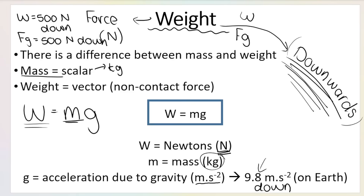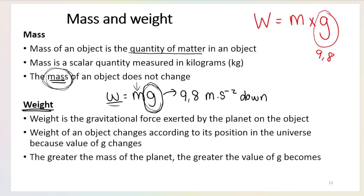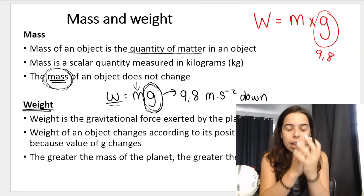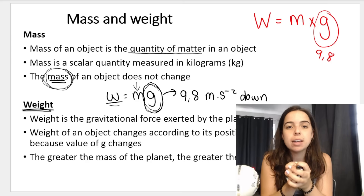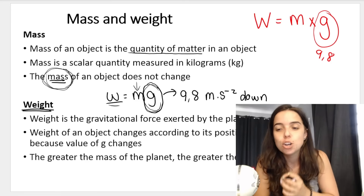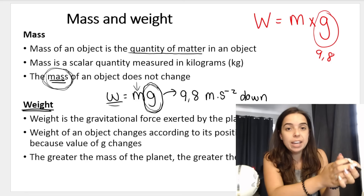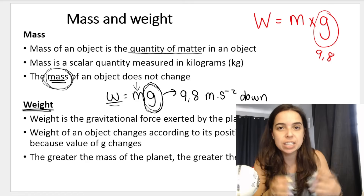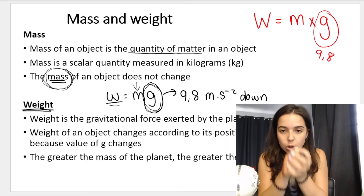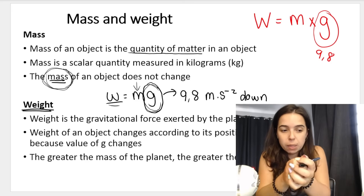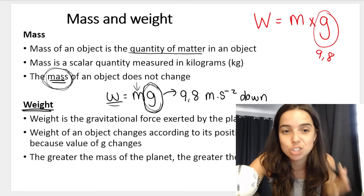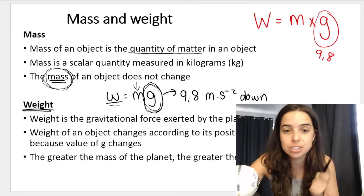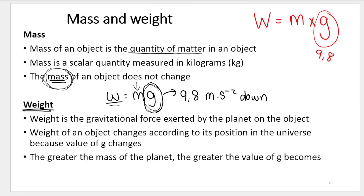Weight is different to mass. Mass is the quantity of matter of an object — how much matter it contains. For a single object, the mass does not change depending on where you put it, no matter which planet it's on. So if it's on Earth it has the same mass as when it's on Mars, the Moon, or Jupiter. However, the weight of an object can change because we use mass times g, and g differs from planet to planet.